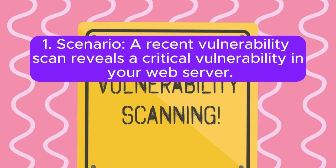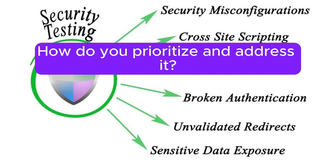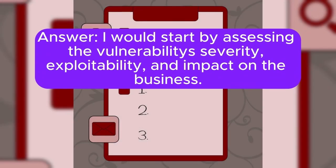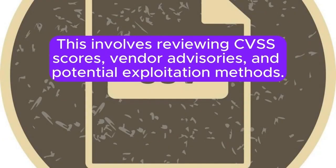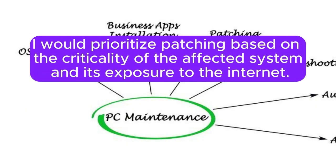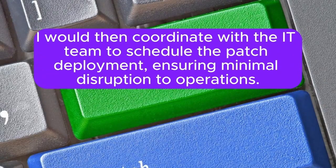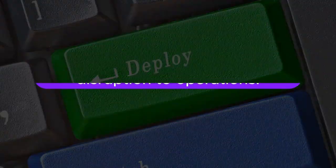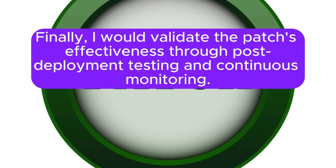Scenario 1: A recent vulnerability scan reveals a critical vulnerability in your web server. How do you prioritize and address it? I would start by assessing the vulnerability's severity, exploitability, and impact on the business. This involves reviewing CVSS scores, vendor advisories, and potential exploitation methods. I would prioritize patching based on the criticality of the affected system and its exposure to the internet, then coordinate with the IT team to schedule the patch deployment, ensuring minimal disruption to operations. Finally, I would validate the patch's effectiveness through post-deployment testing and continuous monitoring.